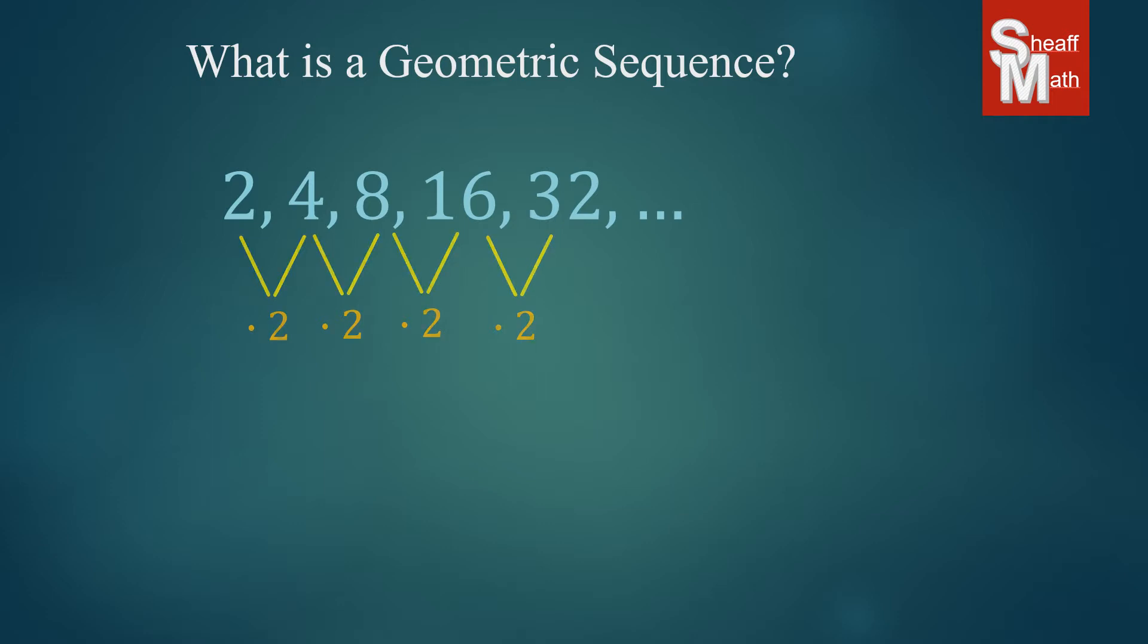And so this number is called the common ratio. And why do we call it the common ratio? Well, because what we're actually doing is we're taking a number and we're dividing it by the number that precedes it, the number right before it.